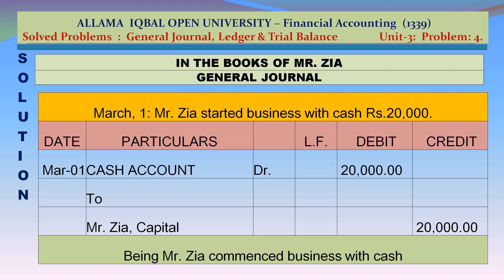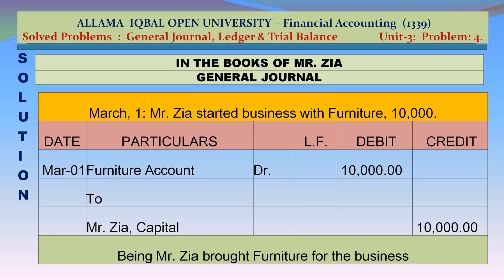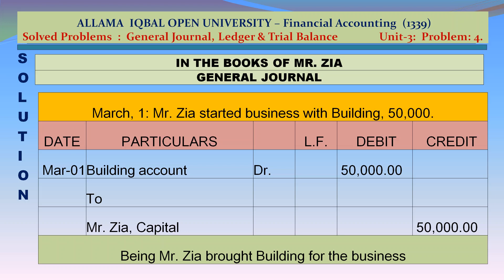In the books of Mr. Jia — Journal. March 1: Cash account debit Rs 20,000 to Zahid capital credit Rs 20,000 — being Mr. Jia commenced business with cash. Furniture account debit Rs 10,000 to Zahid capital credit Rs 10,000 — being Mr. Jia brought furniture for the business. Building account debit Rs 50,000 to Zahid capital credit Rs 50,000 — being Mr. Jia brought building for the business.